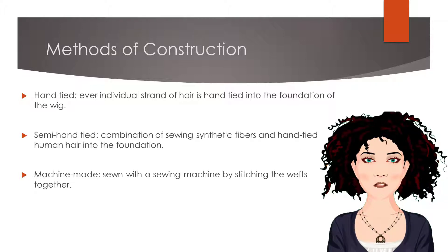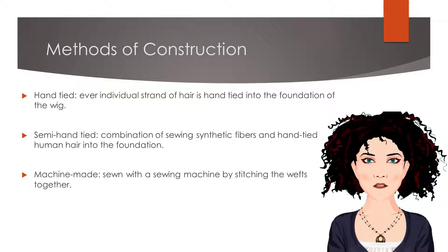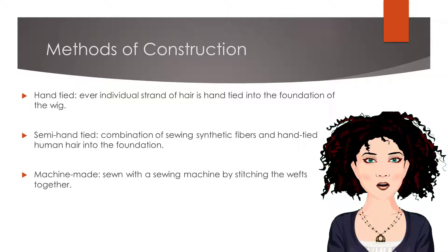Machine made wigs are sewn with a sewing machine by stitching the wefts together. Machine made wigs generally cost much less than hand tied or semi-hand tied wigs.